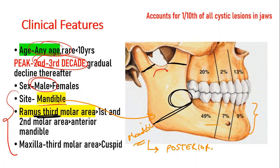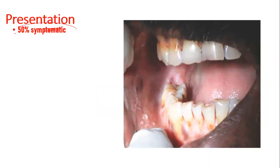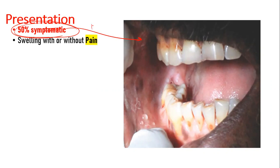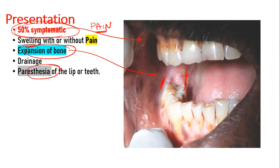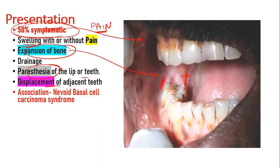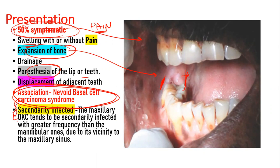After that, it is most commonly seen in the second molar region, followed by the anterior region. Even in the maxilla, the most common site is the posterior maxilla. In its presentation, 50% of the times it is symptomatic. Symptoms include swelling with or without pain, which can cause expansion of the bone — most commonly the lingual and buccal bone. There may be associated paresthesia of the lip or teeth, displacement of adjacent teeth, resorption of adjacent teeth, and an association with the nevoid basal cell carcinoma syndrome. It can also be secondarily infected, and most frequently the maxilla is secondarily infected.